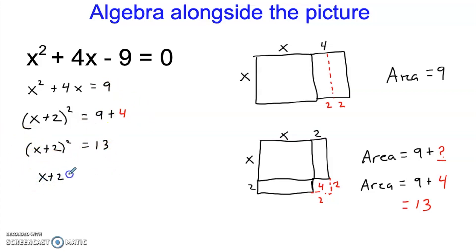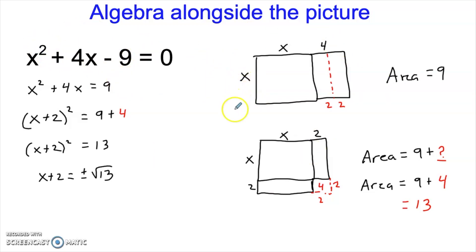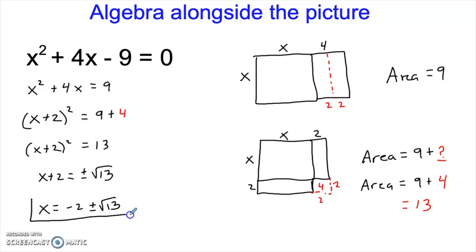And now I can simply take the square root of both sides, getting x plus 2 equals plus or minus the square root of 13. Notice that I'm doing plus and minus this time. That's because now I'm solving an algebraic problem. I'm still using the geometric picture to help me think through the story of what I'm doing. But I am solving an algebraic problem. And this quadratic is going to have two solutions. If I subtract 2 from both sides, I find that the two solutions are negative 2 plus or minus the square root of 13.